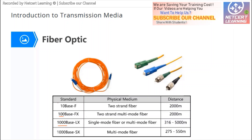In optical fiber there are two types: one is multi-mode and another is single-mode. The single-mode can carry optical signals over a longer distance — about 2 kilometers. The multi-mode can only carry signals several hundred meters.